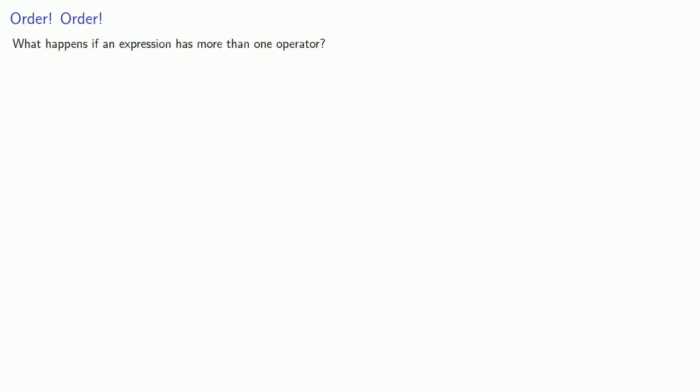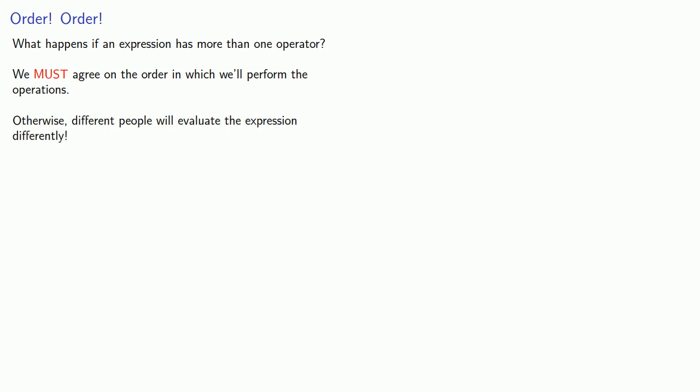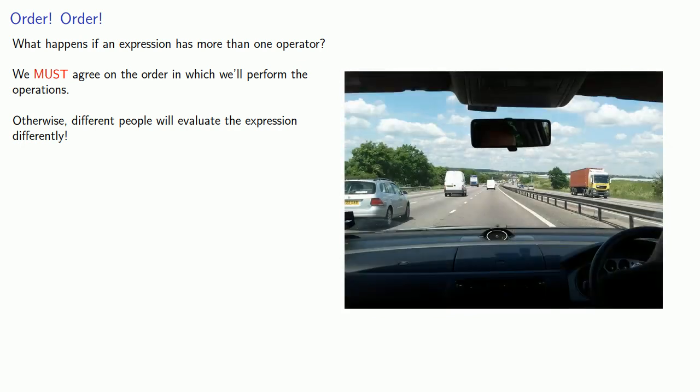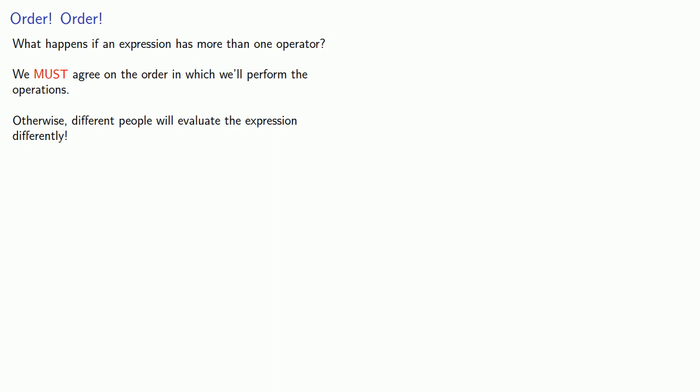We have to ask ourselves: what happens if an expression has more than one operator? We must agree on the order in which we'll perform the operations, otherwise different people will evaluate the expression differently. Order of operations is like deciding which side of the road we're going to drive on. We could drive on the right or the left — as long as we all agree, it's not a problem. The difficulty is when some people drive on the right while others drive on the left.